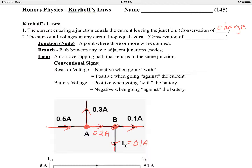The sum of all voltages in any circuit loop equals zero. This is a conservation of energy statement, because voltage is the amount of energy per coulomb — joules per coulomb — so it's directly related to energy. Any path between two adjacent junctions is a branch, and a loop is a non-overlapping path that returns to the same junction.